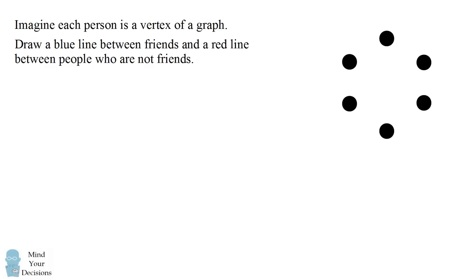We can visualize the problem using graph theory. Imagine each person is a vertex of a graph. We will draw six vertices for the six people in the group. We will draw a blue line between two vertices to represent if the two people are friends, and we will draw a red line between two vertices to represent if the two people are not friends.